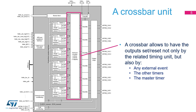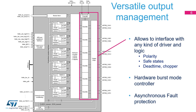A total of 32 set and reset events are available per output. The crossbar is followed by a versatile output management feature, able to interface with any kind of gate driver, program the output polarity, the PWM idle and safe state levels, insert a dead time, and add a chopper modulation. A hardware burst mode controller facilitates light load management with a built-in pulse skipping mechanism. It also features an ultra-fast and asynchronous fault protection feature, independent from the system clock.